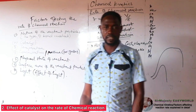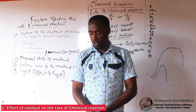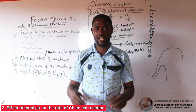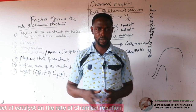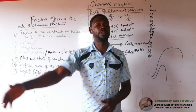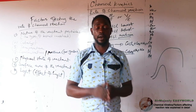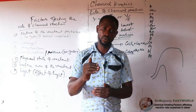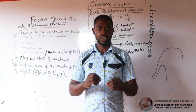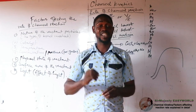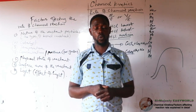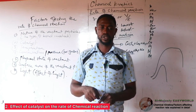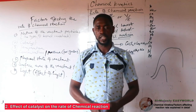The next factor is the catalyst. A catalyst, by definition, is any substance that alters the rate of chemical reaction and remains qualitatively and quantitatively unchanged at the end of the reaction. Do not say catalysts only speed up reactions — that defines only positive catalysts. A catalyst will either slow a reaction down or make it faster.